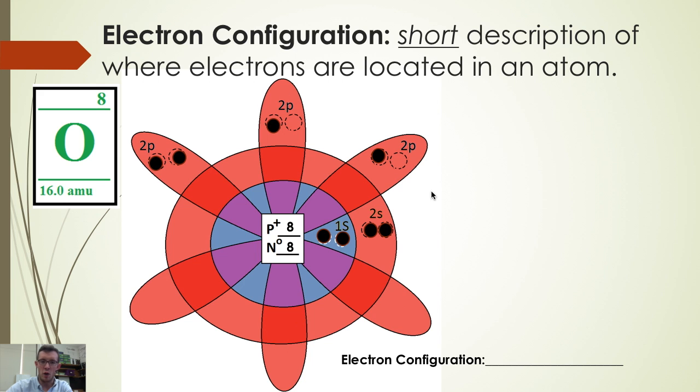Now rather than drawing all of this out, chemists will write an electron configuration. Because the first shell's s orbital has two electrons, chemists will write this as 1s².